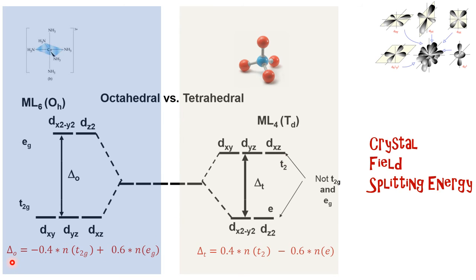Delta O is the crystal field splitting energy for octahedral complexes, where N is the number of electrons at the t2g energy level. Delta T is the crystal field splitting energy for tetrahedral complexes.